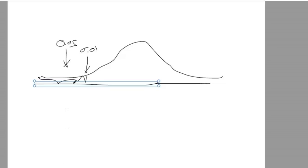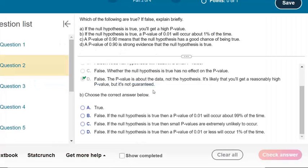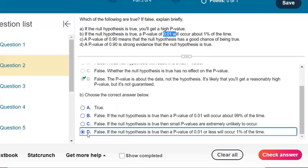So when we calculate those probabilities, we're talking about tails, which are less than or equal to tails. So that's not exactly true either. If the null hypothesis is true, a p-value of 0.01 or less will occur about 1% of the time.